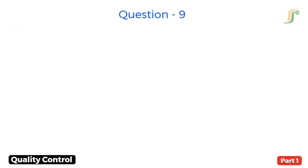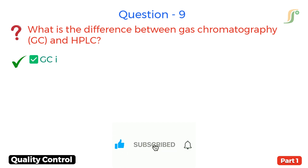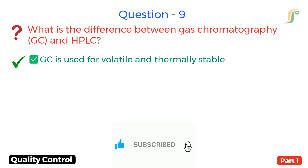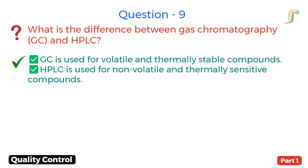Question 9. What is the difference between GC and HPLC? Answer. GC is used for volatile and thermally stable compounds, while HPLC is used for non-volatile and thermally sensitive compounds.